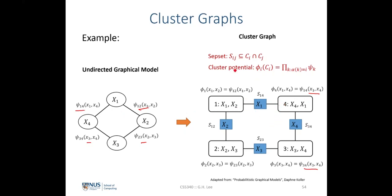The subset defined by the intersection of random variables between two adjacent clusters can be seen in this example. The subset S14, linking cluster 1 and cluster 4, is simply x1, which is the intersection of random variables in those two clusters. Another example is S23, where we look at the intersection between clusters 2 and 3 — only x3 is the intersection. We leave the other examples for you to figure out.